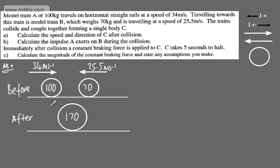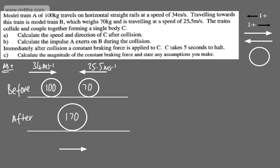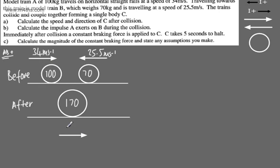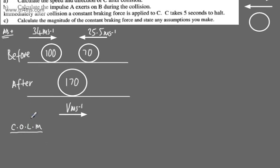If we now consider the speed of C afterwards, we can put the arrow on here. The particles are going to move off in the direction A to B. If we were unsure, all we would do is end up with a negative value if we got this wrong — we'd simply say that C is moving in the direction B to A instead. So let's put V m/s on C and state the conservation of linear momentum: the total momentum prior to the collision equals the total momentum after the collision.